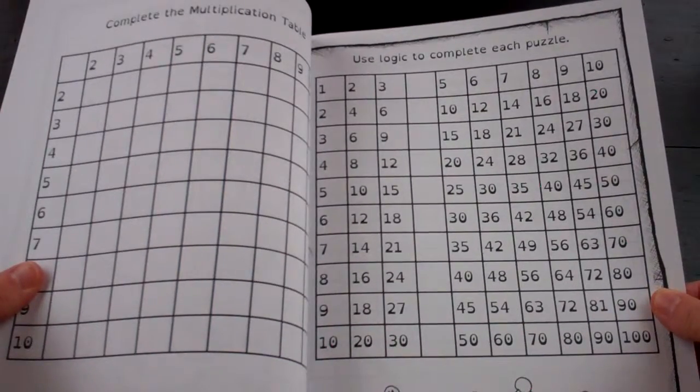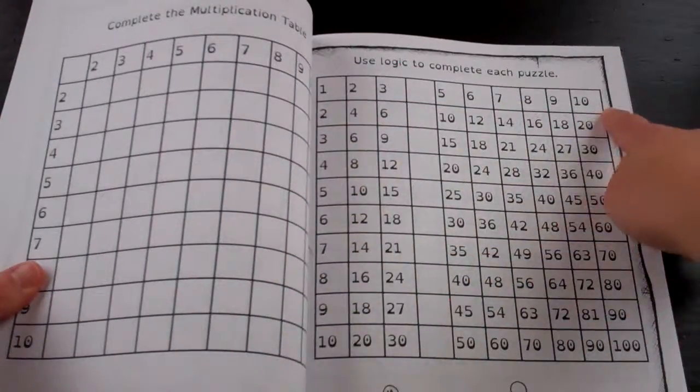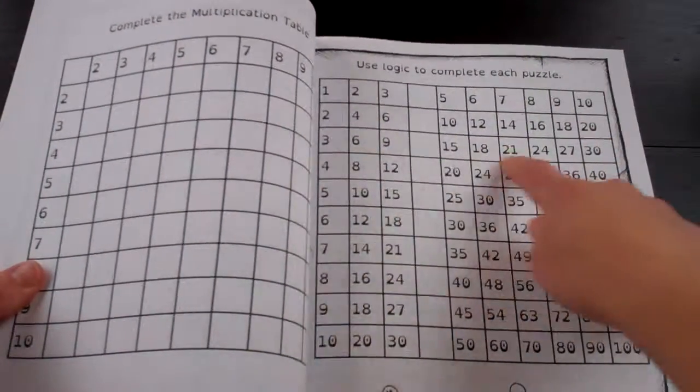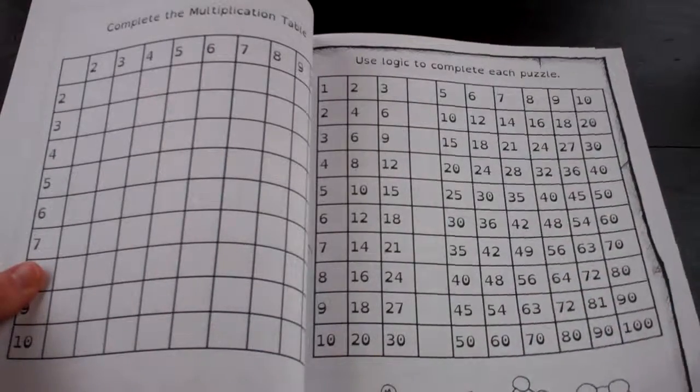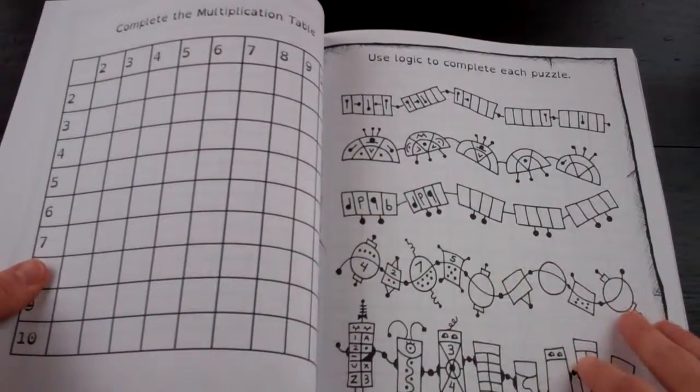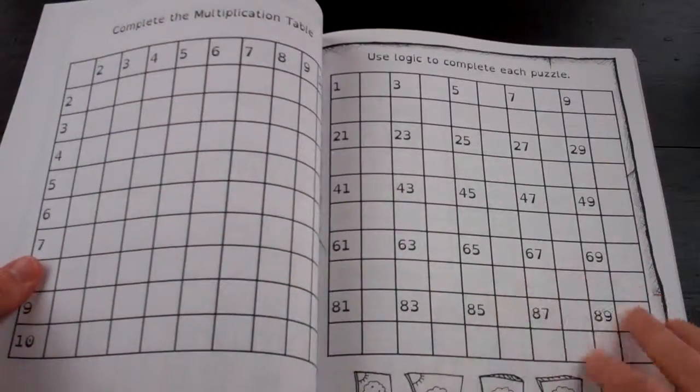And this one's counting by twos. Well, 1, 2, 3, 4, 10, 2, 4, 6, 8, 3, 6, 9. So counting by different numbers.